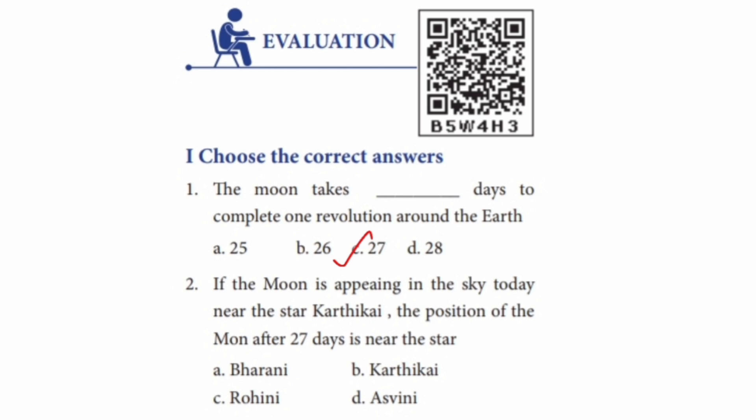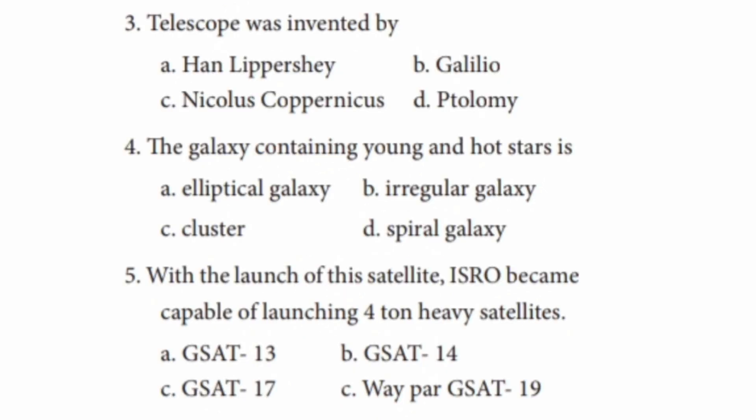Question 2: If the Moon is appearing in the sky today near the star Karthigai, what is the position of the Moon after 27 days? The answer is near the star Aswini.